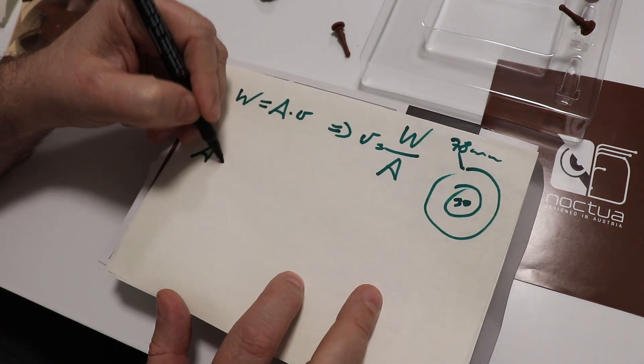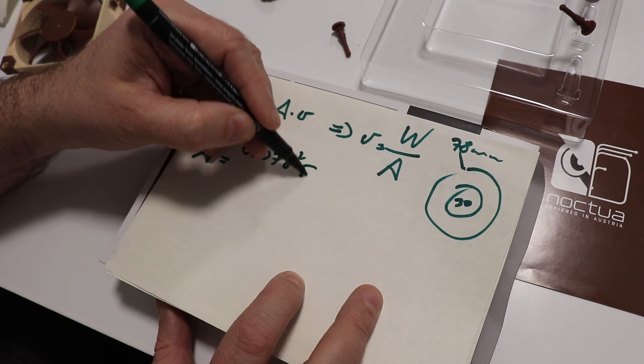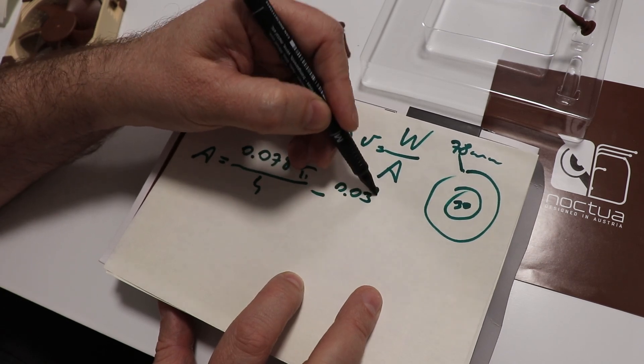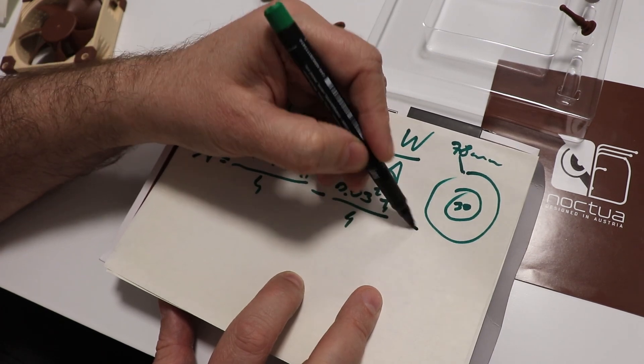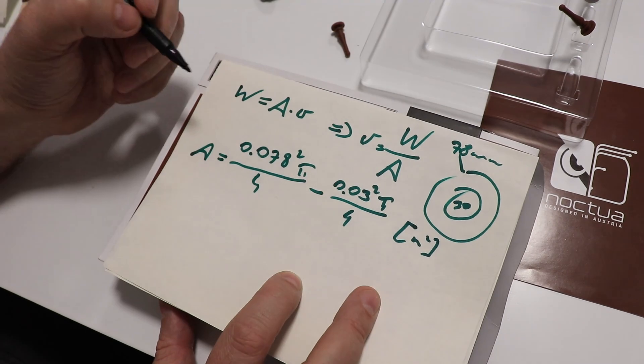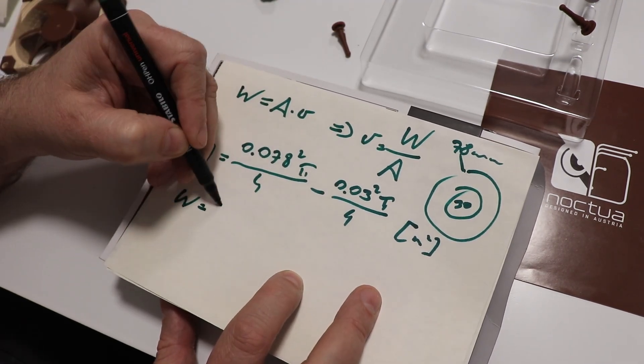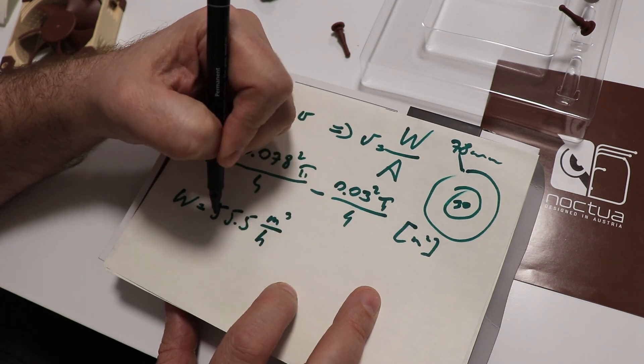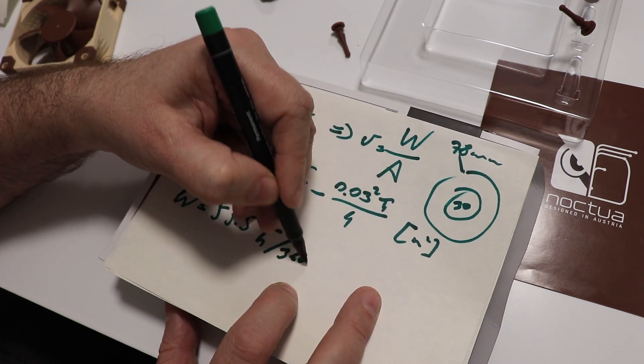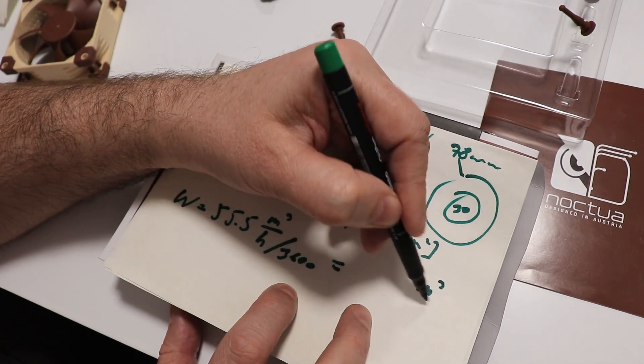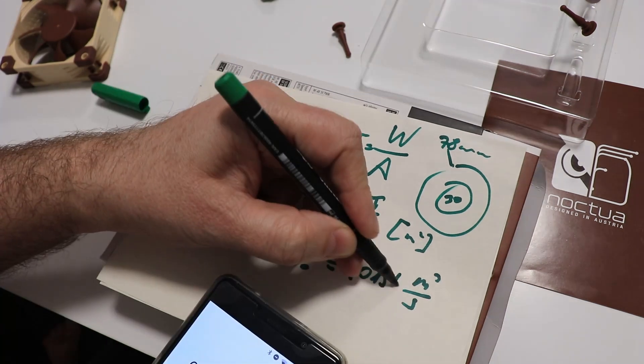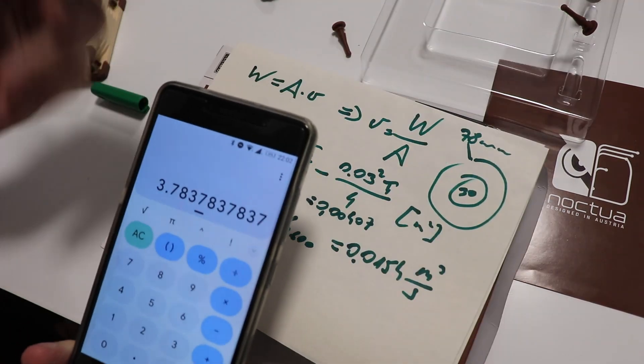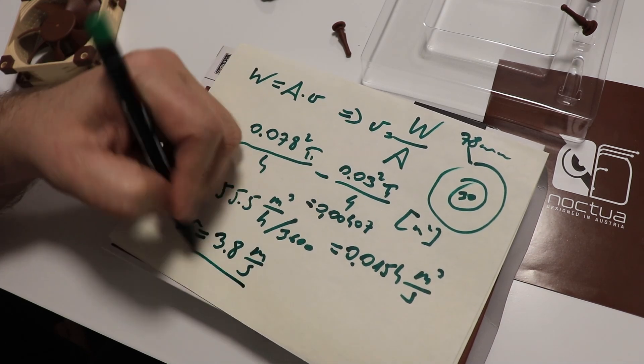So the area is 0.78 squared times pi divided by 4, and then subtract 0.03 squared times pi divided by 4. And this will be in square meters. And the flow rate I have to convert because it is 55.5 cubic meter divided by hours. And I have to divide this with 3600. In this case I will get cubic meters divided by seconds. The area is 0.00407, approximately 3.8.